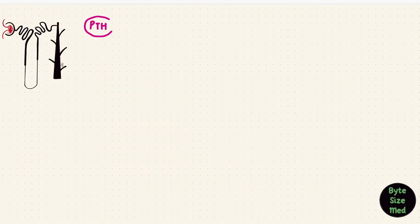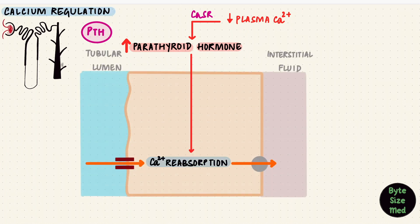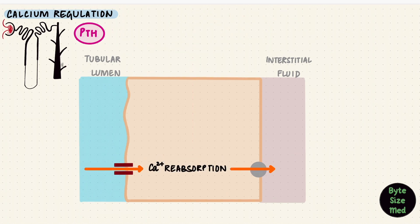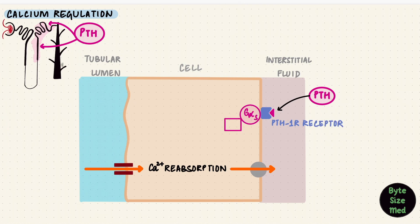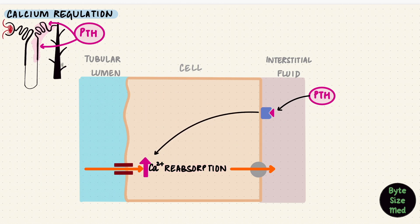So what does PTH do? The parathyroid hormone is a calcium-regulating hormone. It responds to low plasma calcium levels — low calcium increases PTH release. It senses this with its calcium-sensing receptor, and in the kidney it increases calcium reabsorption to fix that low calcium. Remember it only acts on the thick ascending limb of the loop of Henle and the distal convoluted tubule; it does not act on the proximal tubule. It acts via cyclic AMP: PTH binds to its receptor coupled with a G protein, which activates adenylyl cyclase, converting ATP to cyclic AMP, which activates protein kinase A, phosphorylating proteins to increase calcium reabsorption.